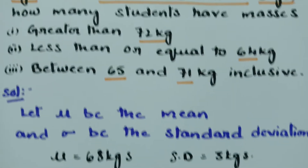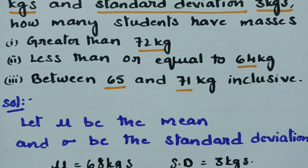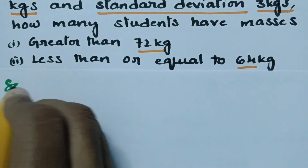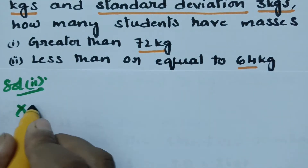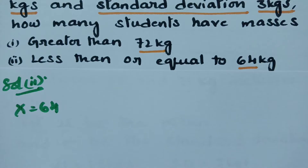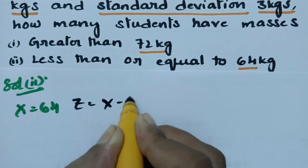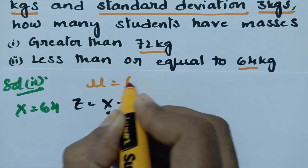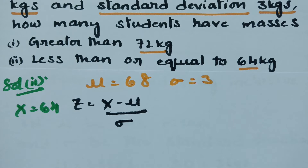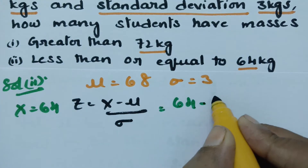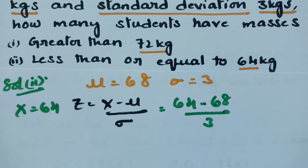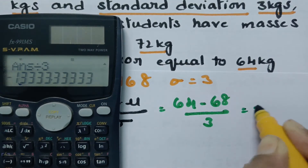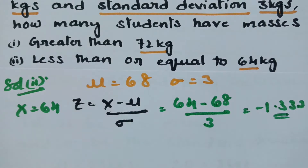For solution 2, the question asks for the probability of x less than or equal to 64 kg. When x equals 64, the z value is z equals x minus mu divided by sigma, which gives 64 minus 68 divided by 3. The value is minus 1.333.